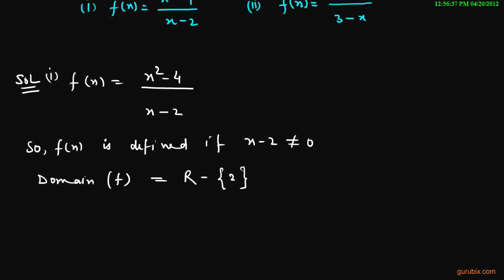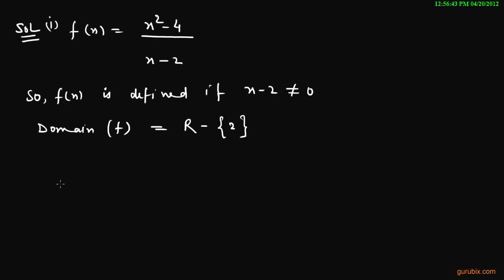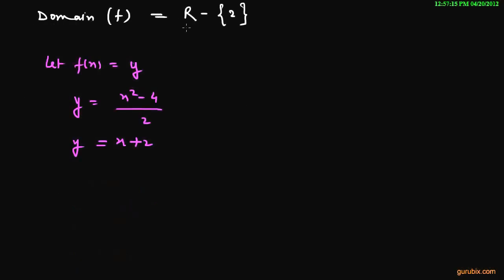Now we shall find the range of this function. For that, we let f(x) equal to y. Then y equals x squared minus 4 over x minus 2, which simplifies to y equals x plus 2. Since the domain of the given function is the set of real numbers except 2, the range of the given function f will be the set of real numbers except 4.